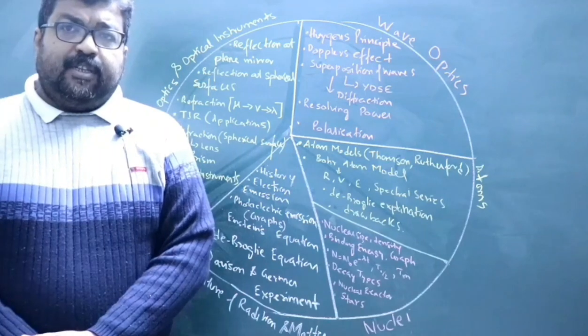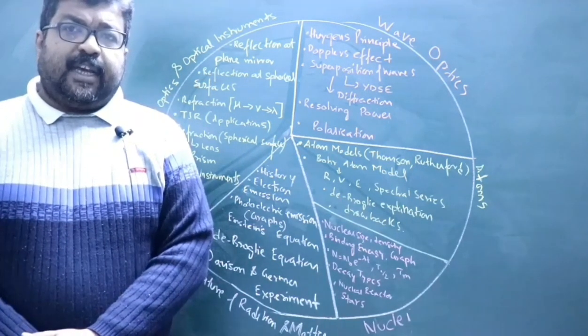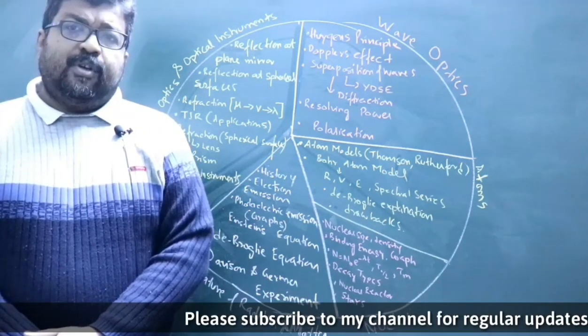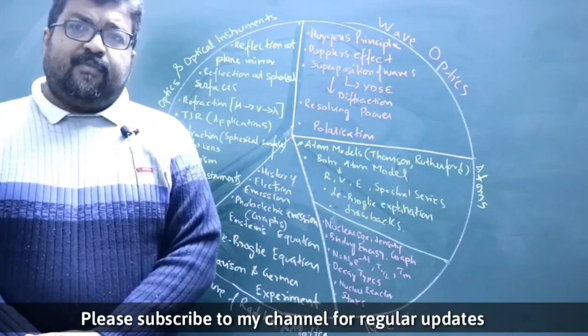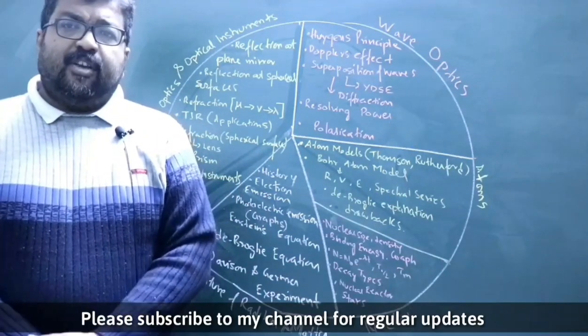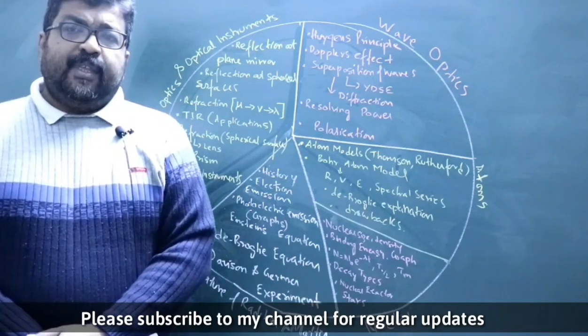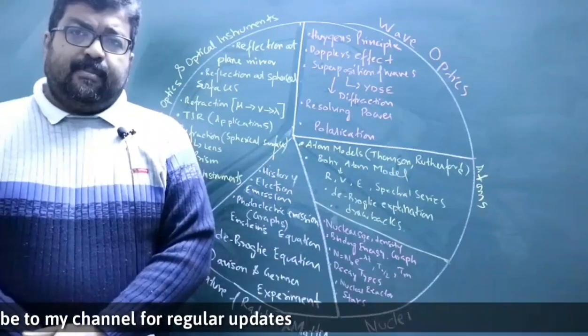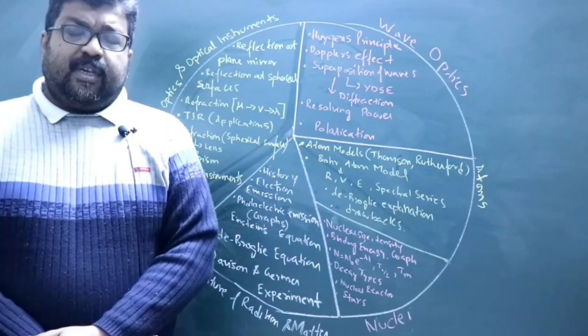First, we will discuss ray optics and optical instruments. This chapter is basically the study of two phenomena: reflection and refraction. Starting from reflection at plane surfaces, then proceeding to reflection at spherical surfaces - reflection from concave mirror and convex mirror. Study the basic sign conventions, then based on those sign conventions you must be able to derive the mirror formula and the formula for magnification.